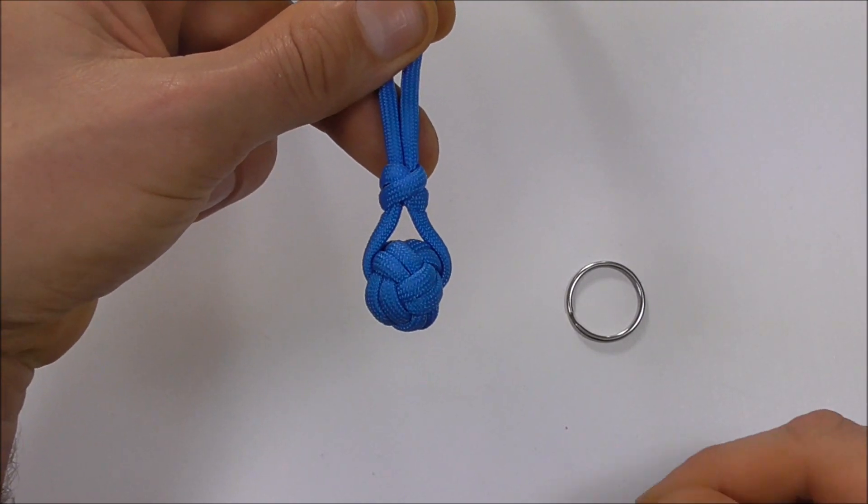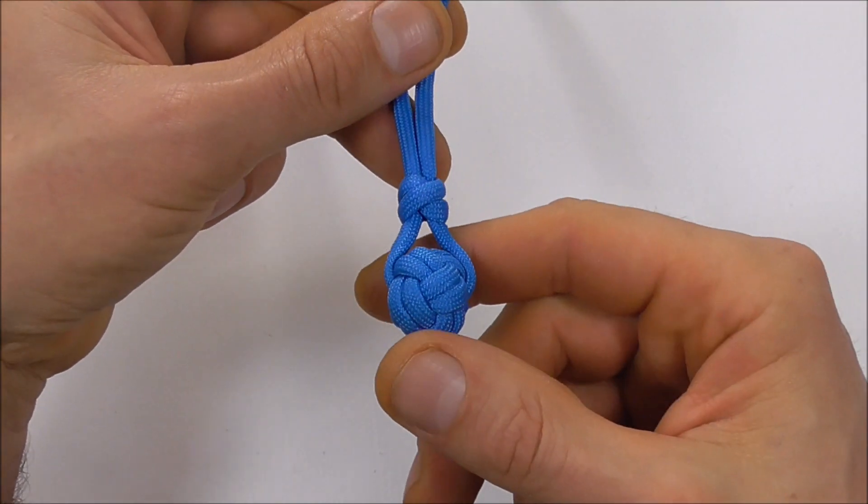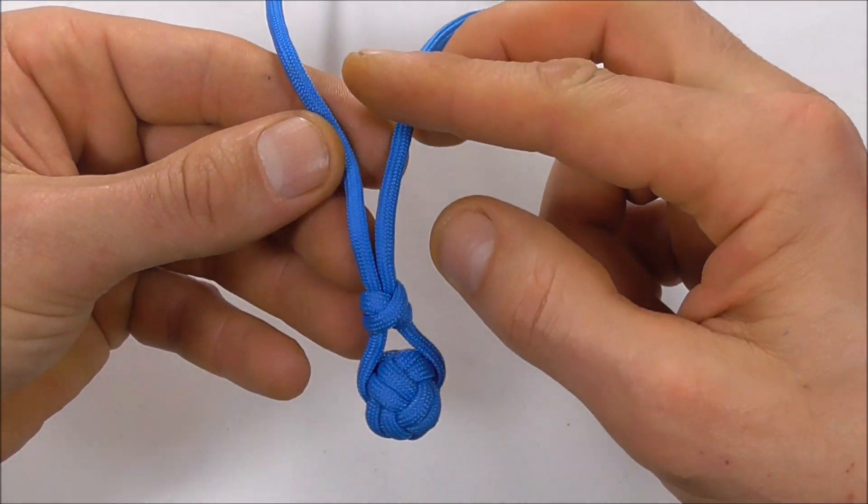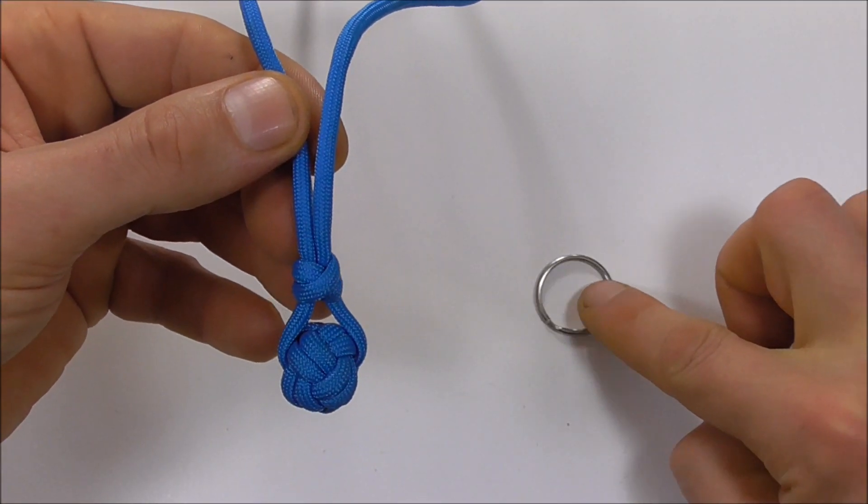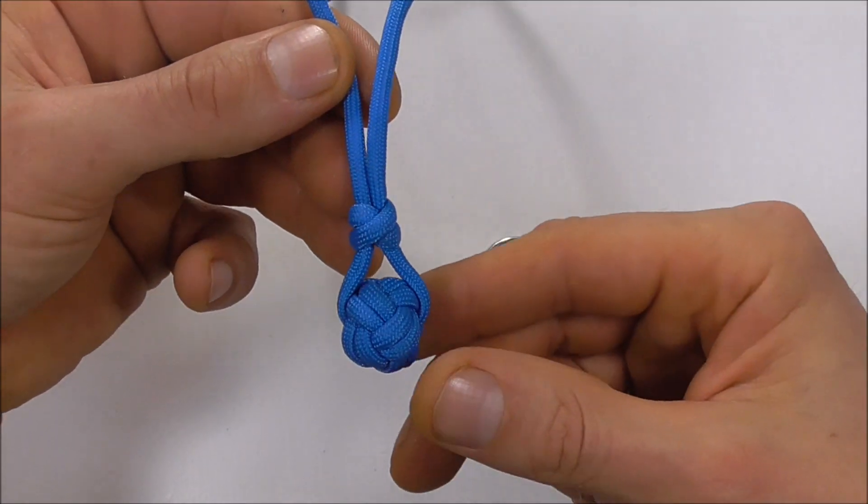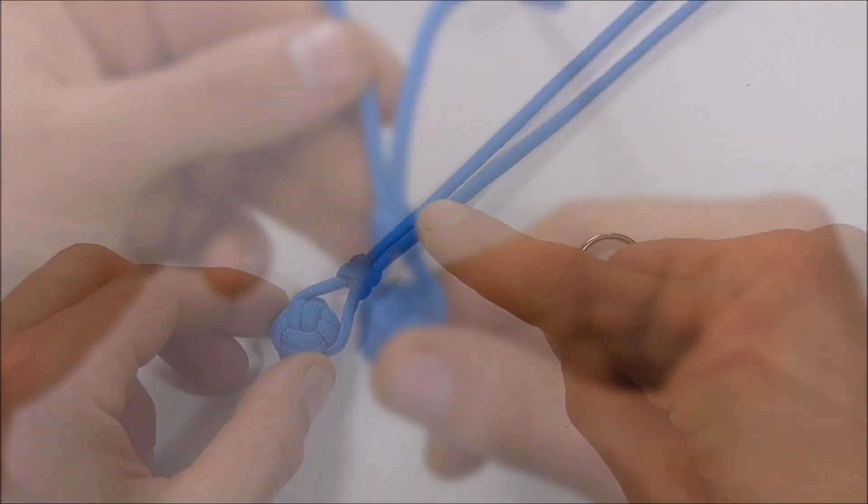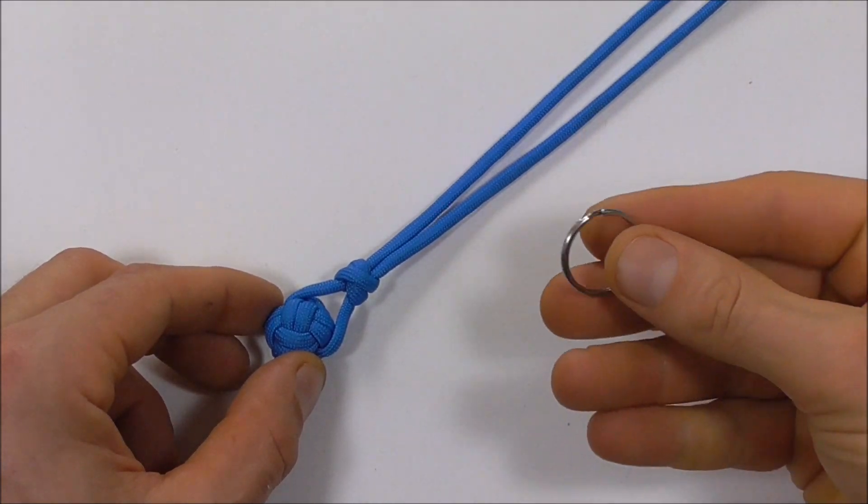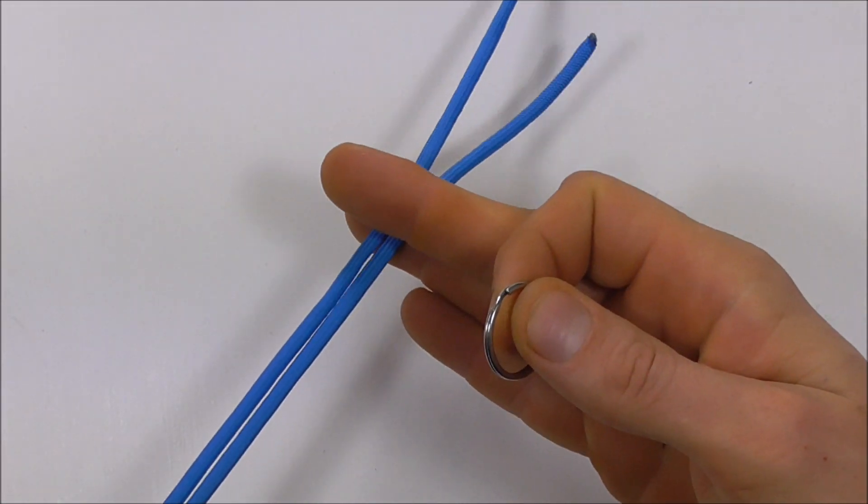Hi YouTube friends, it's Tom here. Welcome! Today we're going to look at how to tie two strands to a keyring using the double connection knot. The first thing you want to do is feed these two strands through your ring.